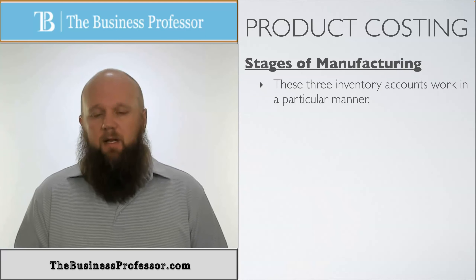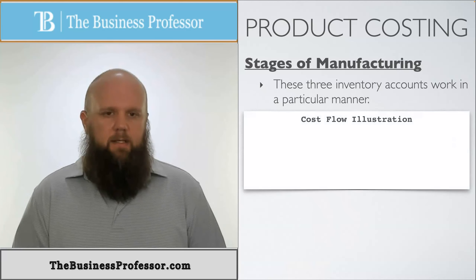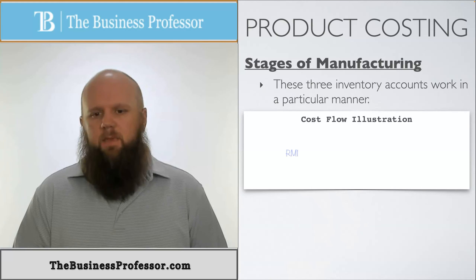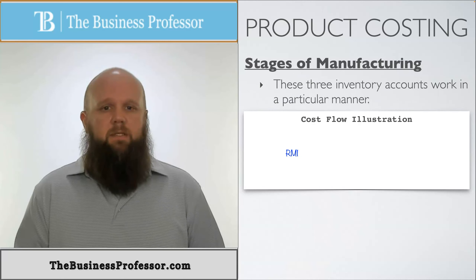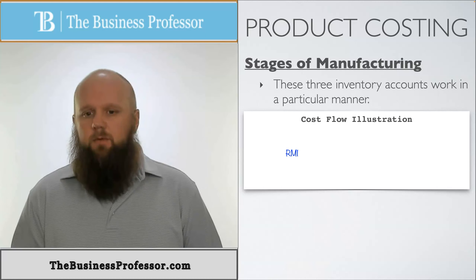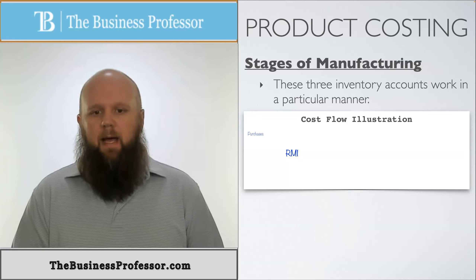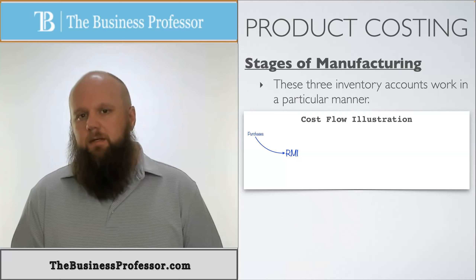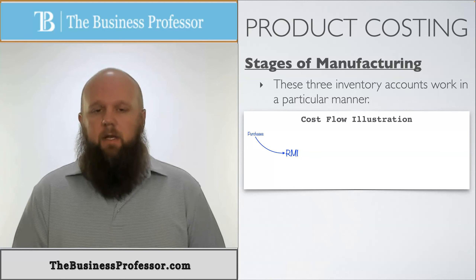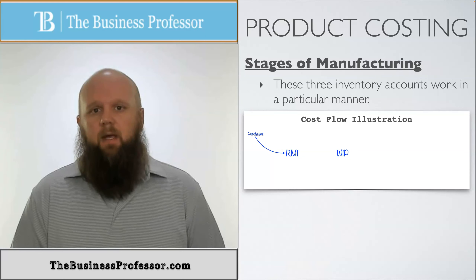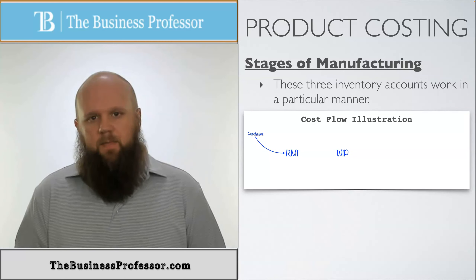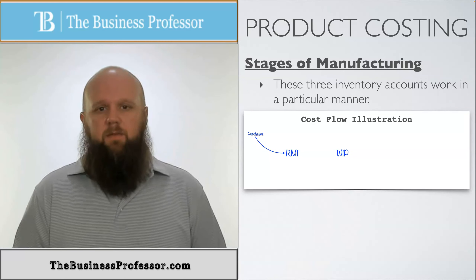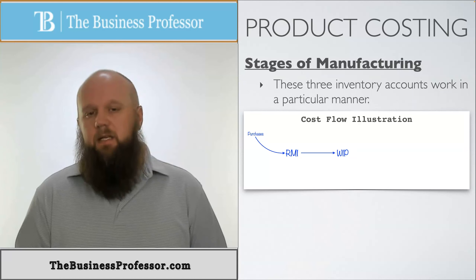Looking at this in illustration format: we start with raw materials, where we bring in all the materials we're going to use. The only way we can increase this balance is by adding purchases. Out of raw materials come materials that go into work in process the moment we start working on the product. Raw materials encompasses both indirect material and direct material. The direct material goes directly into work in process.